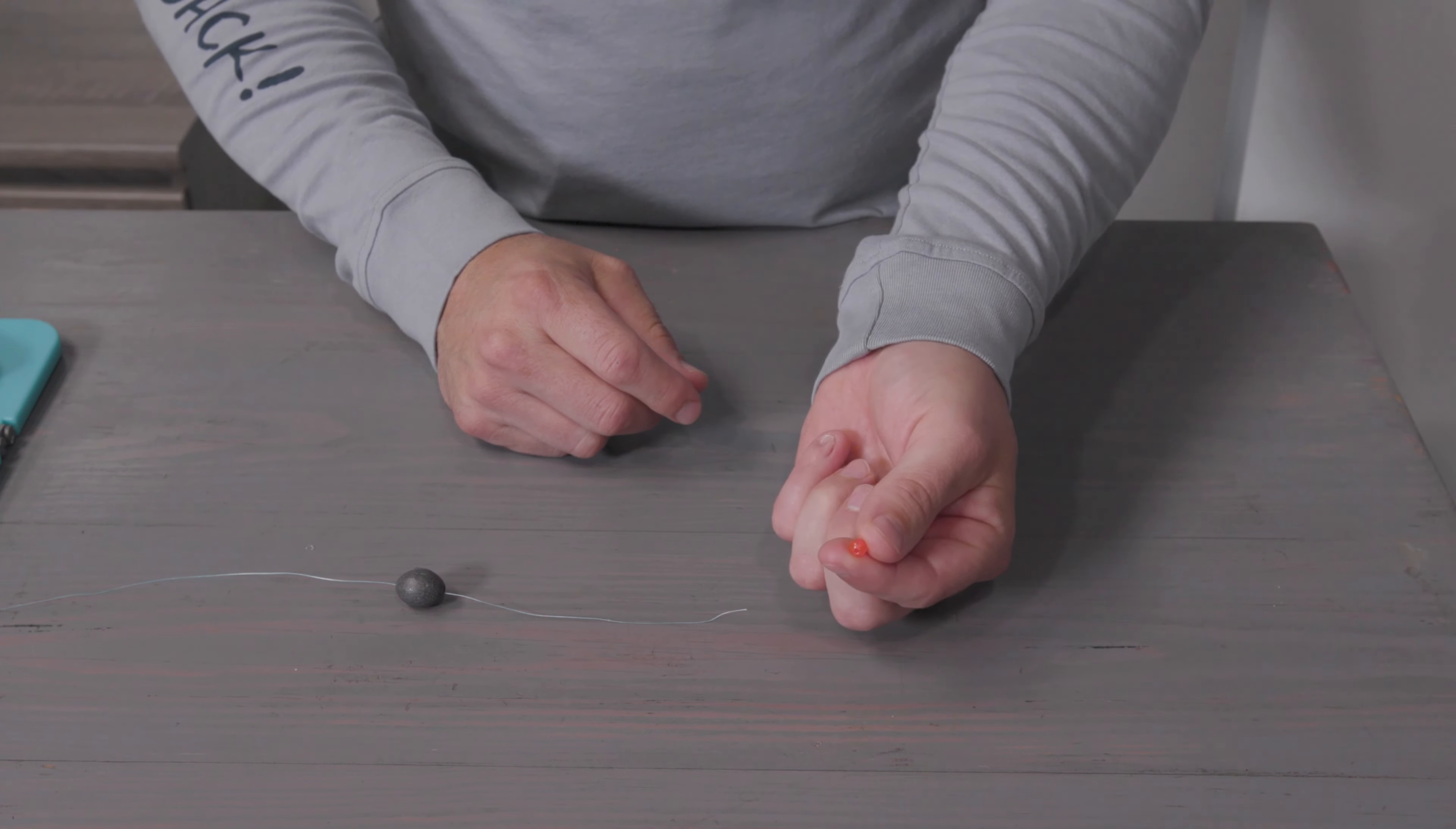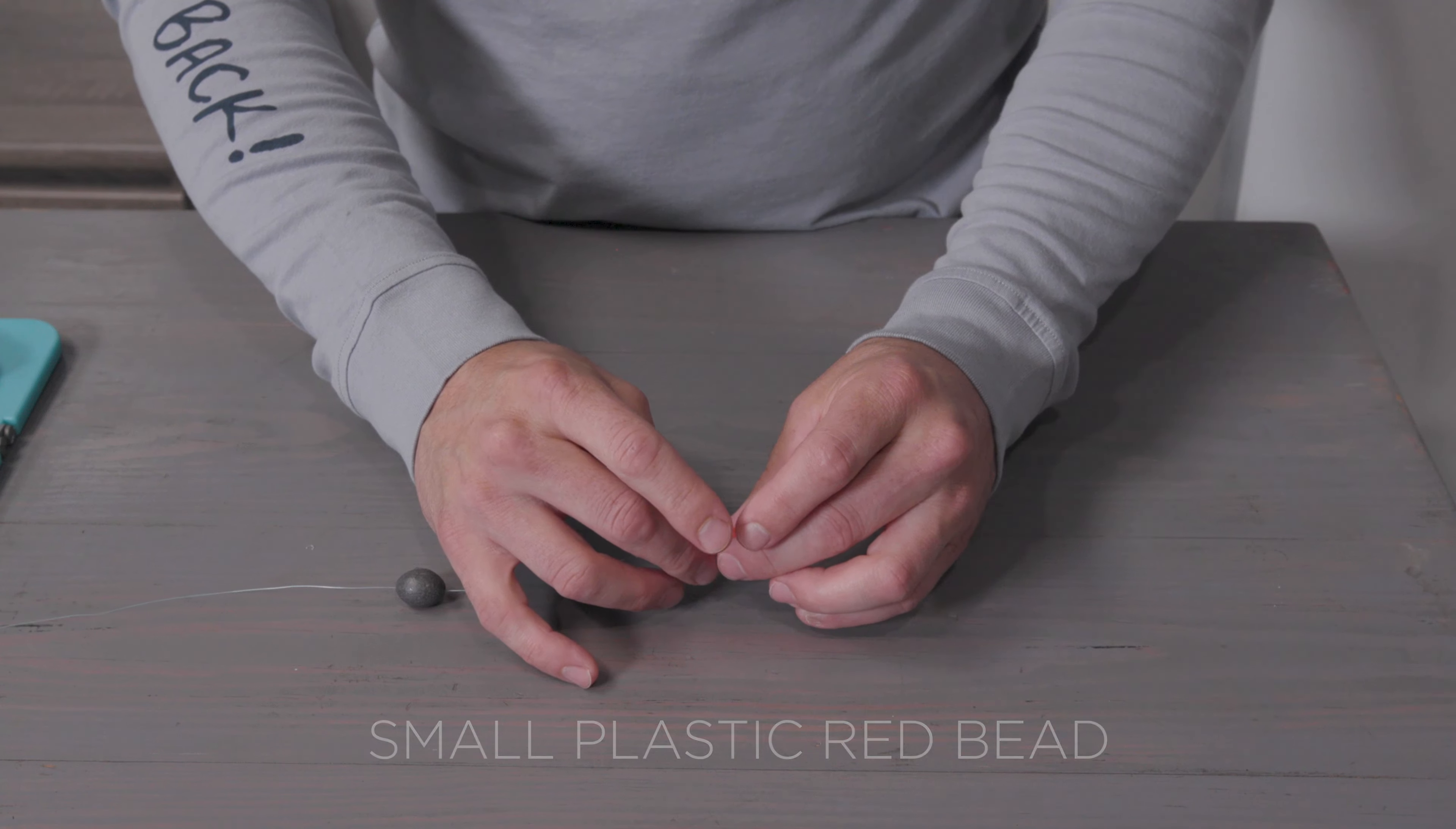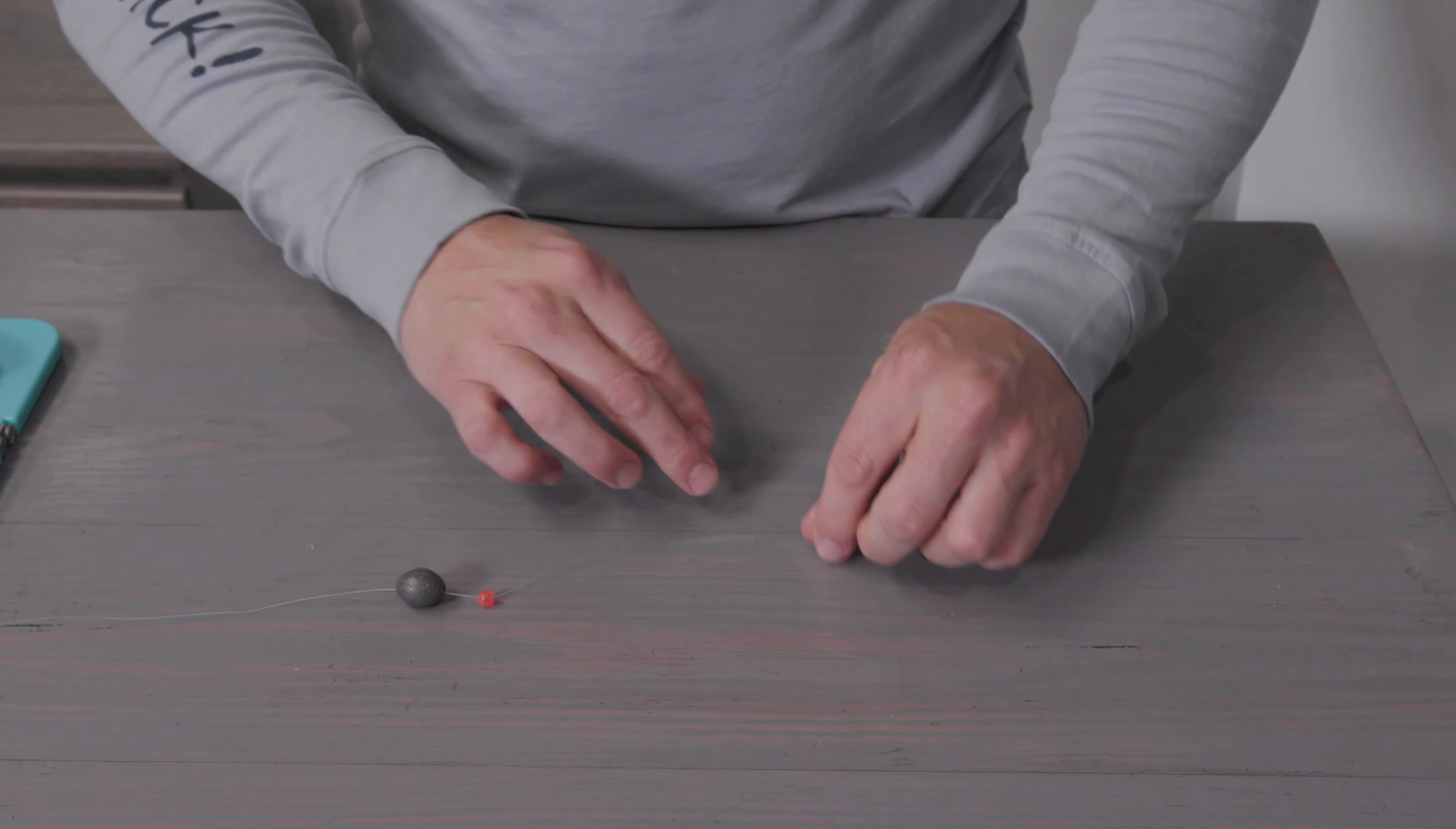Step number two: you want to apply a small red bead to your line. What this bead does is it protects your knot and keeps the line from fraying around your knot.